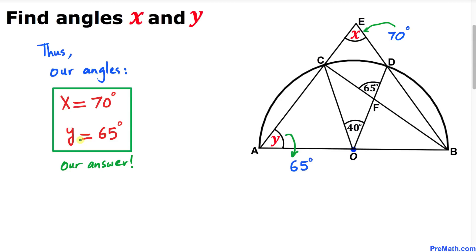So our final answers are: angle x equals 70 degrees and angle y equals 65 degrees. Thanks for watching and please subscribe to my channel for more exciting videos.